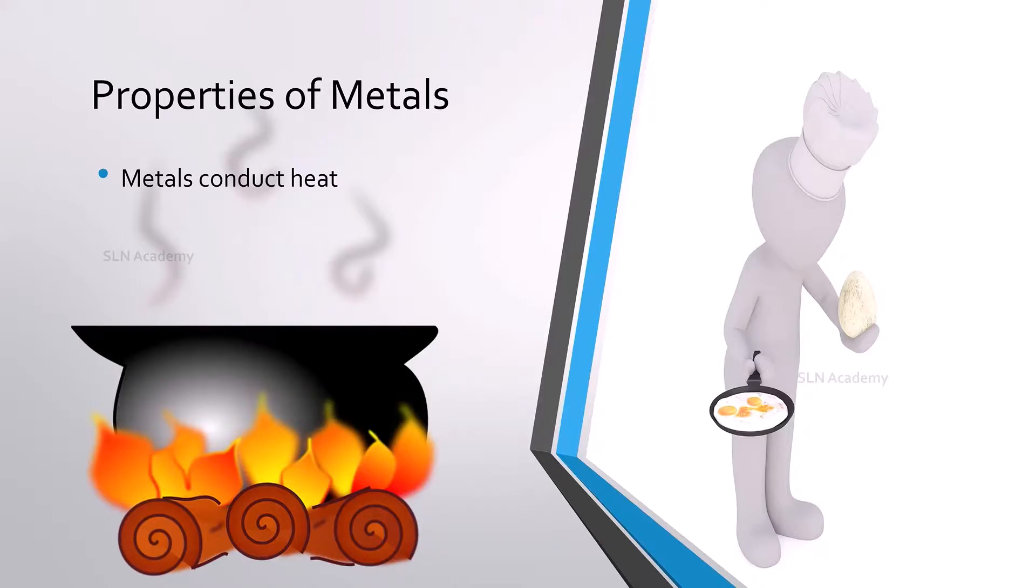Metals conduct heat well. That means metals allow heat to pass through them quickly. That is the reason we use metal utensils for cooking. Copper is a good conductor of heat.